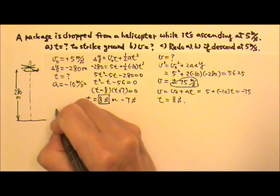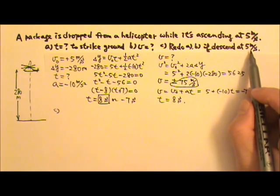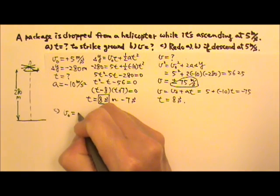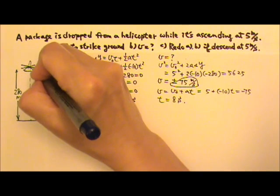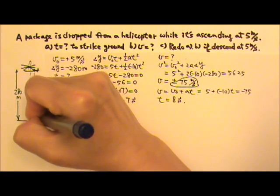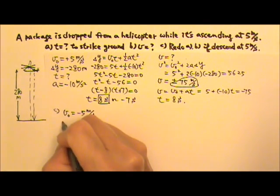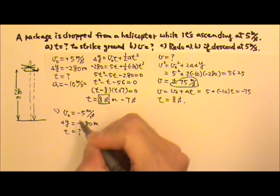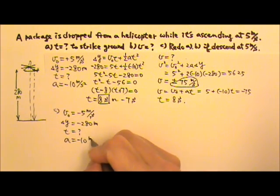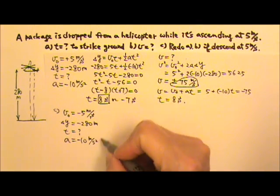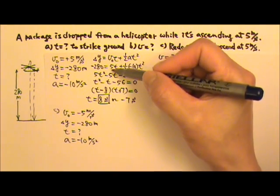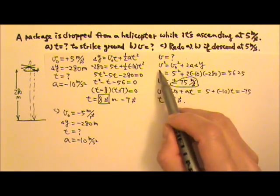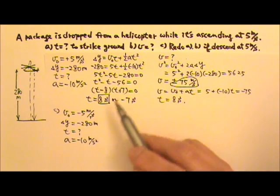Part C: if the helicopter is descending at 5 meters per second when the package is released, the package has an initial velocity of negative 5 meters per second, meaning it goes straight down without going up. Delta Y is still negative 280, and the acceleration is still the same gravitational acceleration. You can use the same equation with negative 5, solving the quadratic, or use the v-squared equation to find the final velocity first and then find the time.